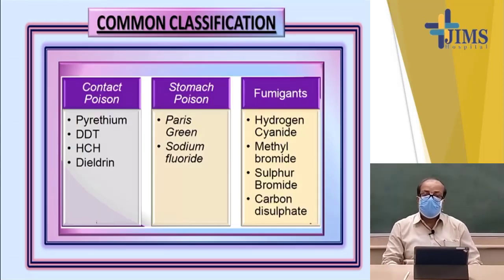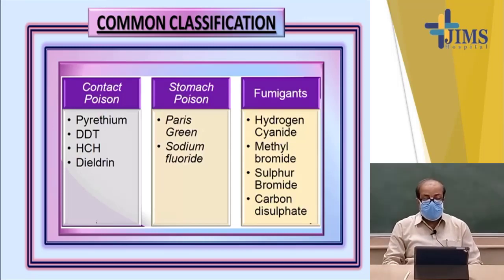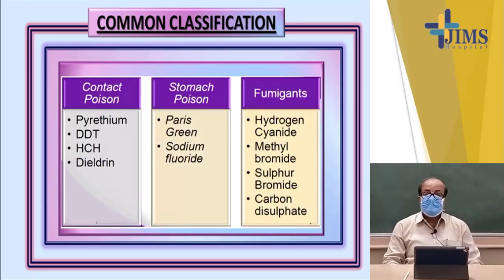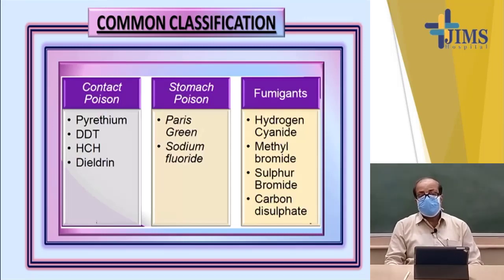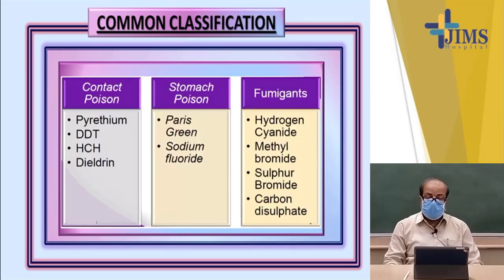This slide shows the common classification of insecticides. There are three kinds: contact poison, stomach poison, and fumigants. Contact poisons include pyrethrum, DDT, HCH, and dieldrin. Contact poison means that as soon as insects come in contact with these particular insecticides, they will die.